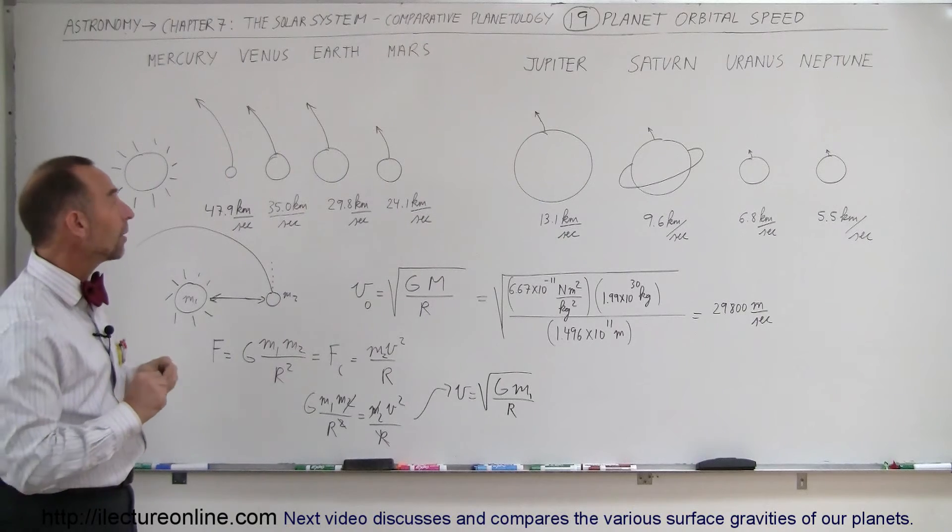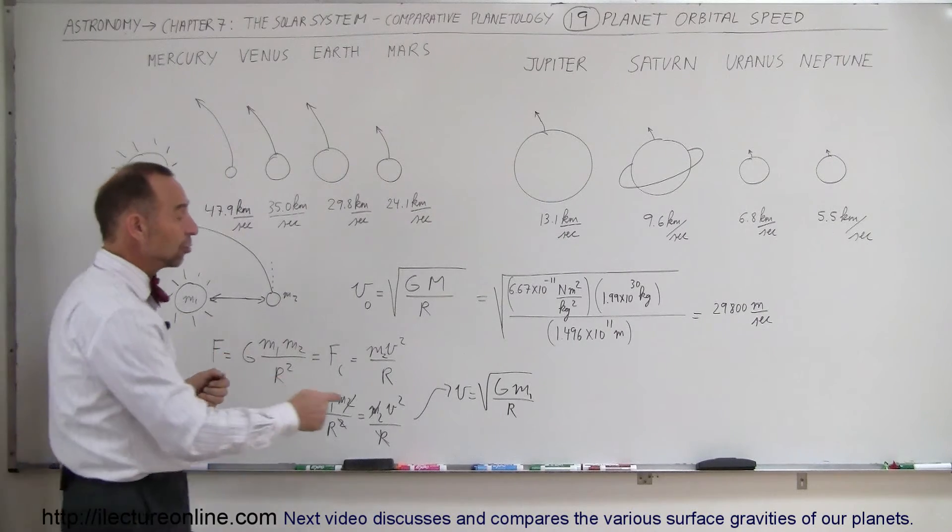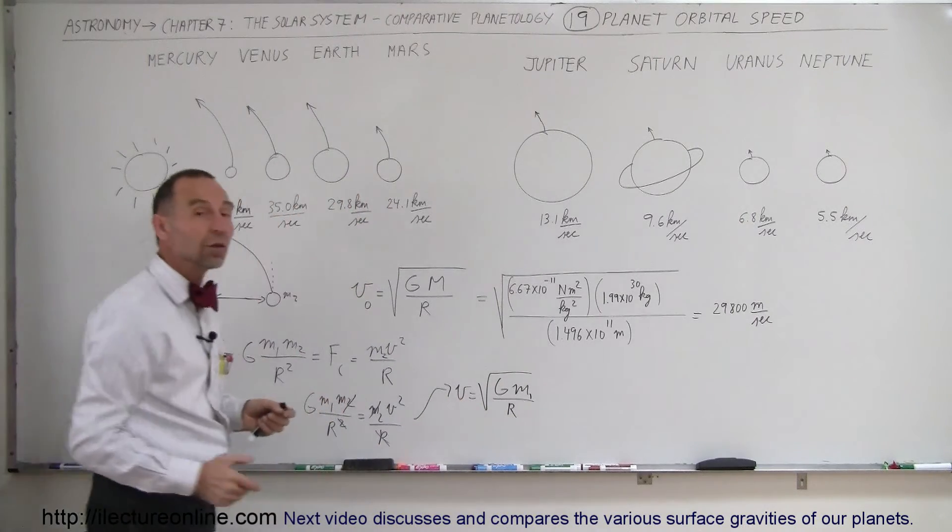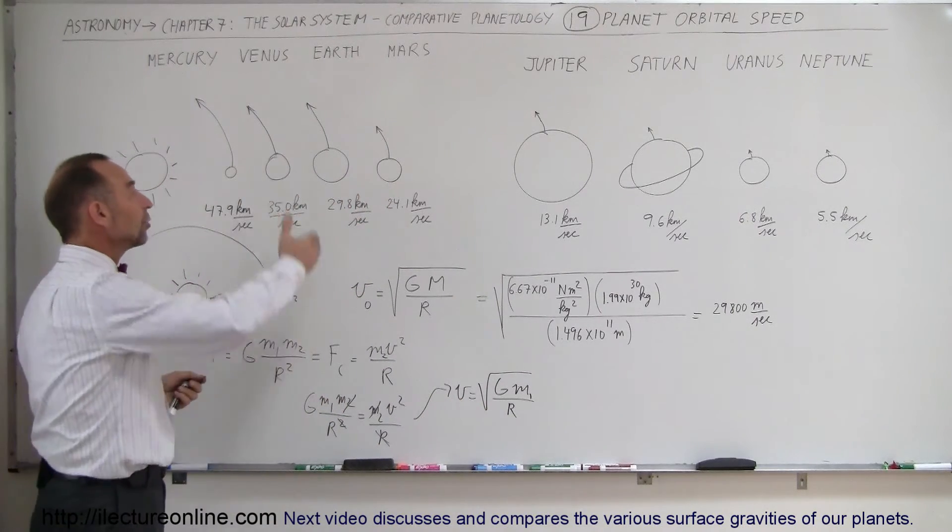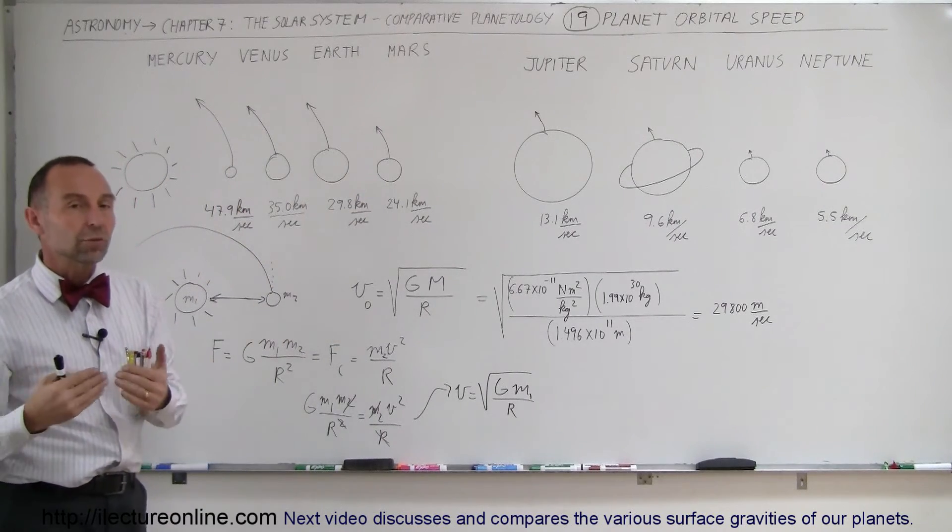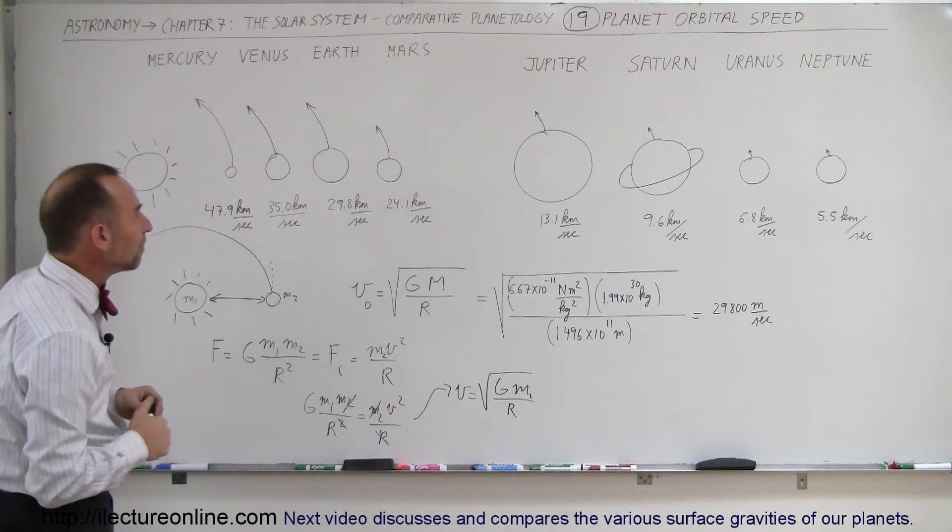The mass of the planet has no bearing. So, that's why, as you go farther and farther out, as R becomes bigger, v will become smaller. And so, in order to stay in orbit around the sun, the planets that are farther away simply must move slower and slower to stay in orbit around the sun.